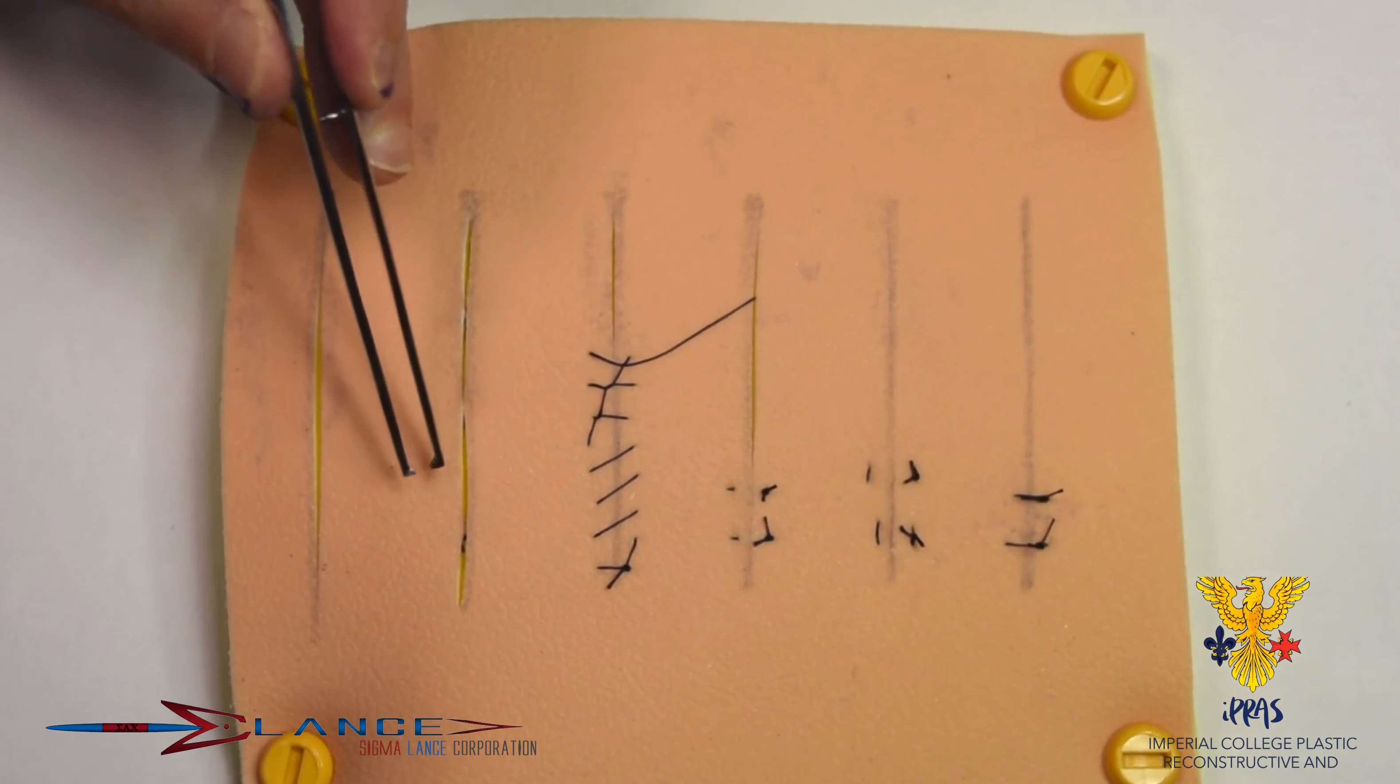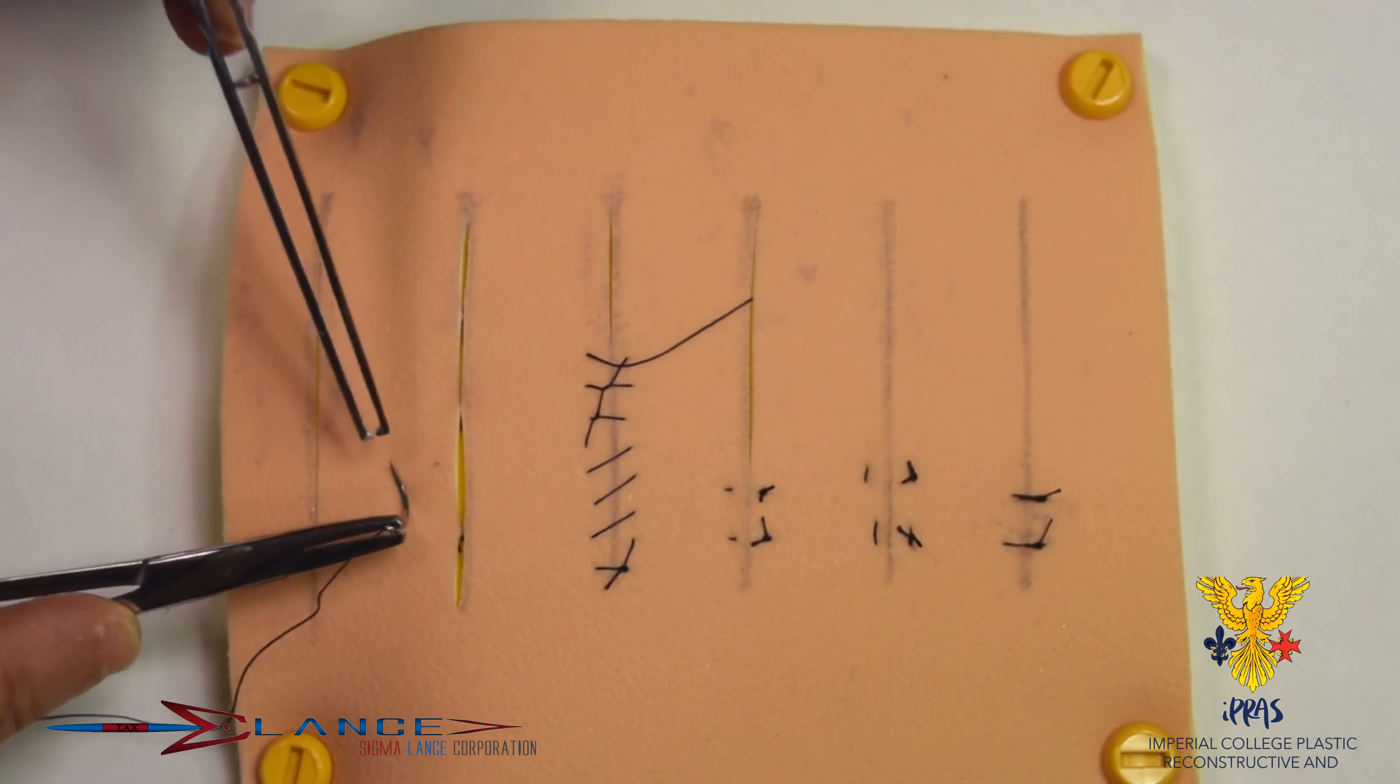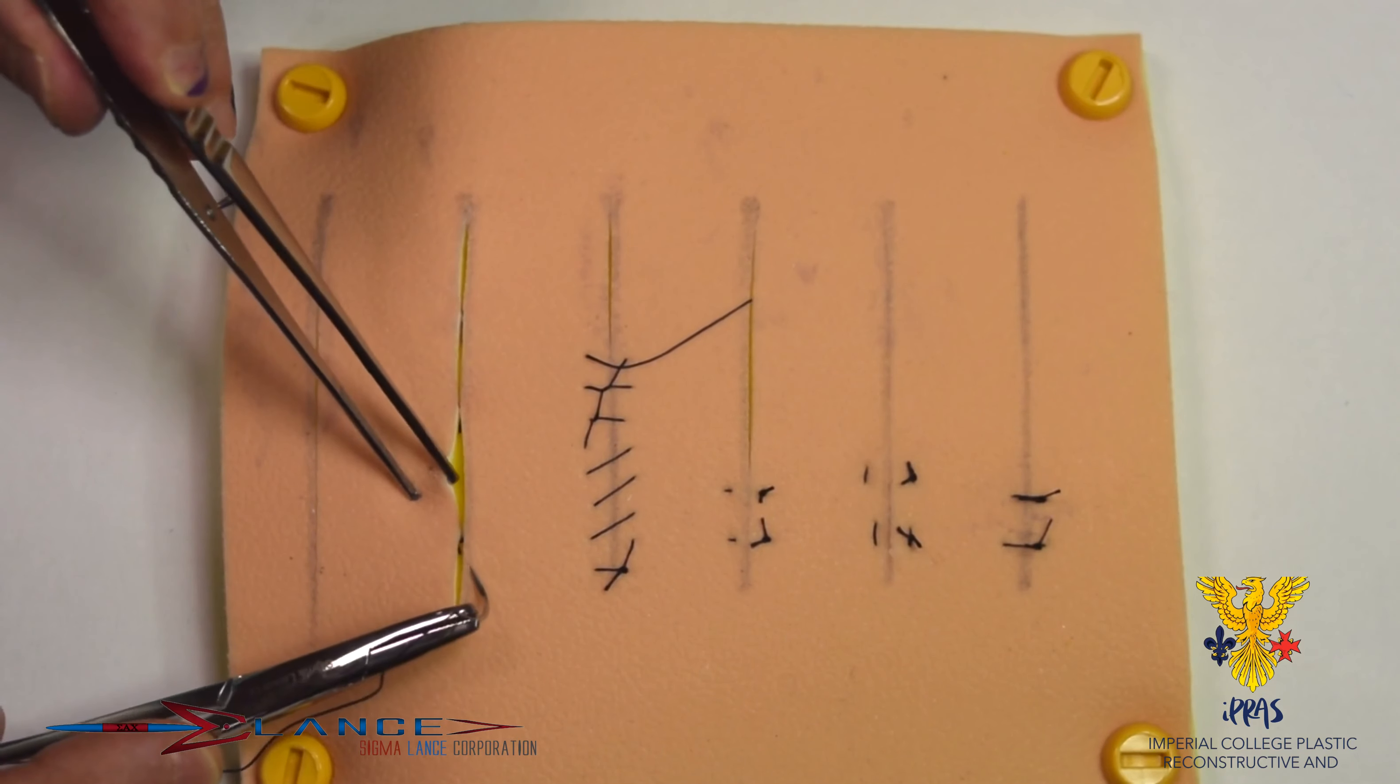Okay, so the next suture we're going to demonstrate is the subcuticular suture, which is the commonest way plastic surgeons close the wound. And this shows a typical example of what would happen ordinarily in a normal wound.